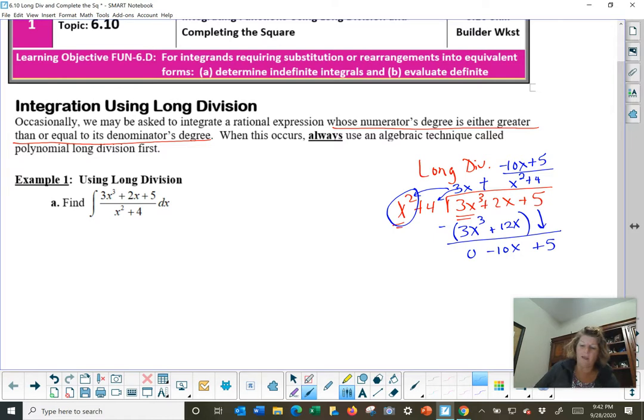This will become a remainder of plus negative 10x plus 5 over my divisor x squared plus 4. This now, we can come over here and update our integral. We'll have the integral of 3x, that'll be easy, plus negative 10x plus 5 over x squared plus 4. And you're like, wait a minute, that doesn't look so easy.